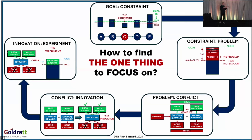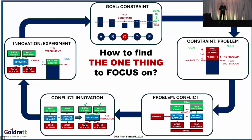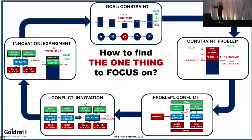Now that you've solved that problem, you have more of the constraint resource — more demand, more capacity, more supply, more cash, or more management attention. Has the amount of goal units gone up? If so, and the constraint is still that resource, what's the second problem to solve? Or maybe you've improved that one resource so much that the constraint has now moved somewhere else — and then you just keep following the process.